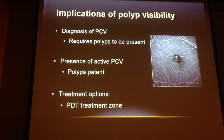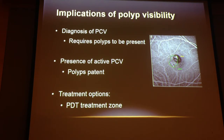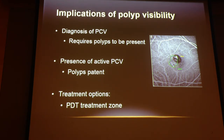What are the implications? First, to diagnose PCV we need to see the polyps — if we can't see them, we can't diagnose it. Second, do we know whether it's active after treatment? Is there a recurrence, or is it just the BVN that's active? Are there polyps we can choose to laser or perform photodynamic therapy on? If we choose to do photodynamic therapy, we need to plan the treatment zone and cover the polyps with the laser spot. If we don't see the polyps, we can't cover them. There are different treatment options — photodynamic therapy with anti-VEGF, photodynamic therapy alone, or anti-VEGFs — and there's still debate.